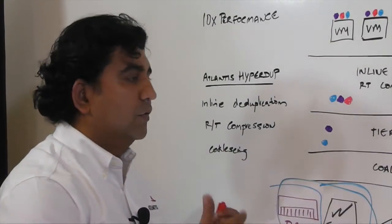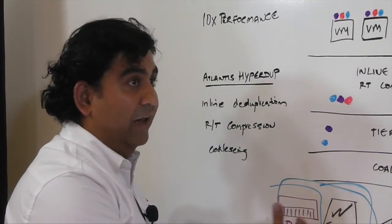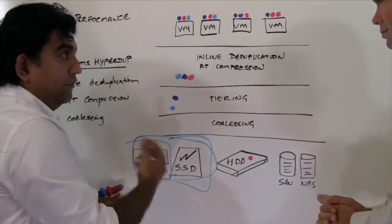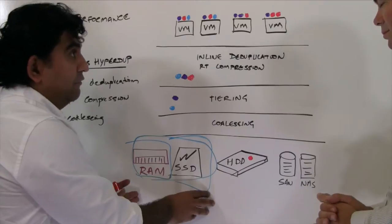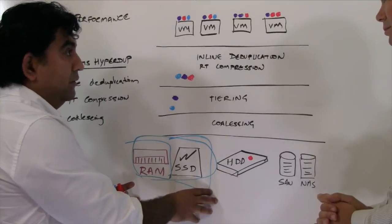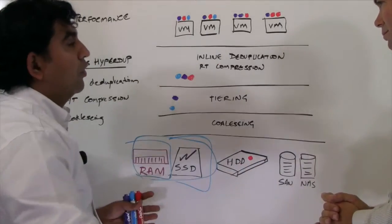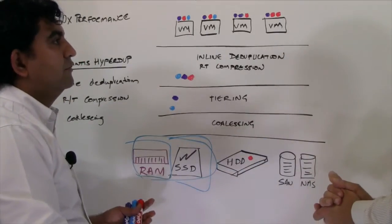So using the right media and the right locality of that media for the right performance. RAM is on each server, so it gives you the best latencies. Server-side flash, again, an extremely fast medium. PCI Express is a great way to do the performance tiers over there. And then spindle, either server attached or under SAN NAS for the actual capacity.